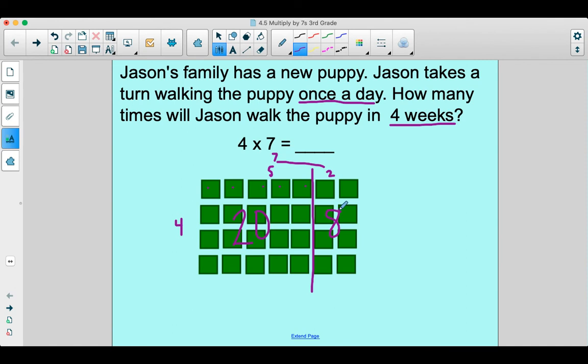All right. So we broke the seven into a five and a two. A lot of kids use that to make it a friendlier number. And then at the end, you just add them all together and you get 28.